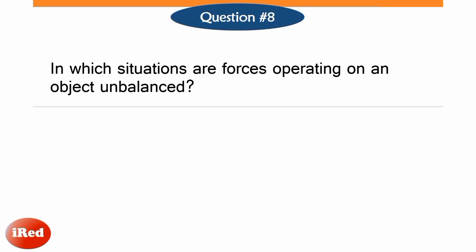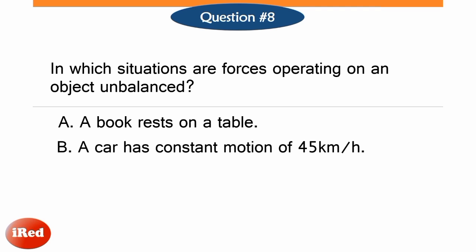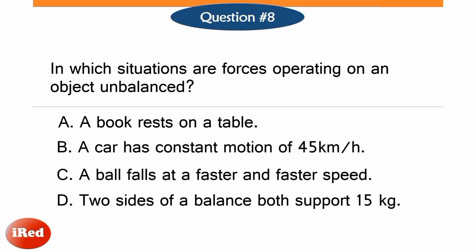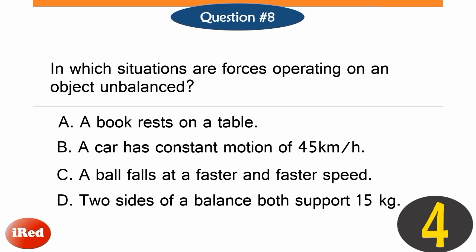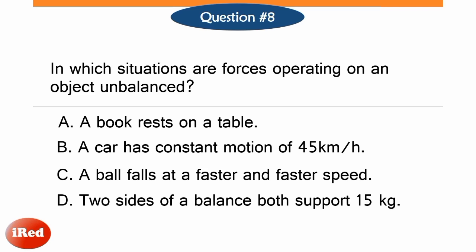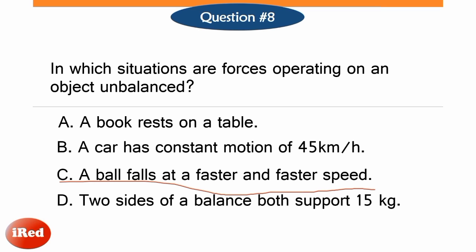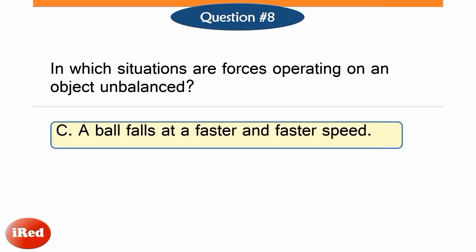In which situations are forces operating on an object unbalanced? Letter A, a book rests on a table. Letter B, a car has constant motion of 45 km/h. Letter C, a ball falls at a faster and faster speed. Or letter D, two sides of a balance both support 15 kilograms. You would know there is an unbalanced force acting on an object if the object accelerates, based on Newton's first and second laws. It is only option C where the object accelerates, implying the forces are not balanced. So the answer is letter C.